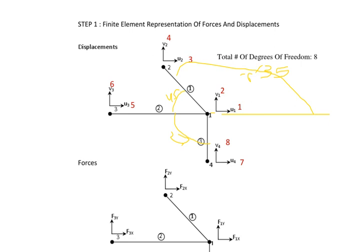Now for element 1 with θ = 135°: L² = cos²θ = 0.5, M² = sin²θ = 0.5, and L×M = sinθ × cosθ = −0.5. These direction cosine values will be substituted into the stiffness matrix formula for element 1.